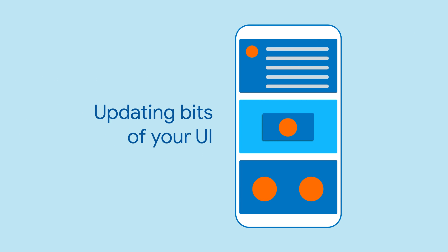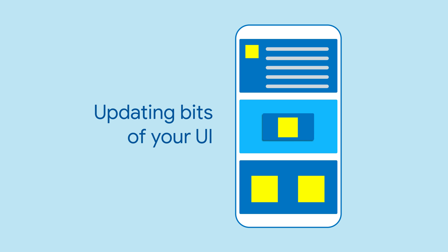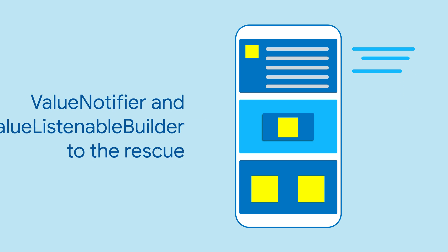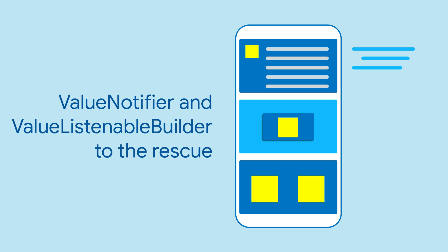Imagine you have some data that's used throughout your app and you want your app to update whenever or wherever the data changes. This sounds like a coding nightmare, working out where the data changes and then manually updating the UI in multiple places. But not if you use ValueNotifier and the ValueListenableBuilder widget.